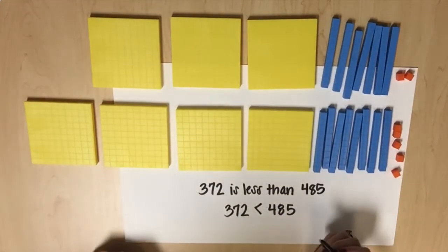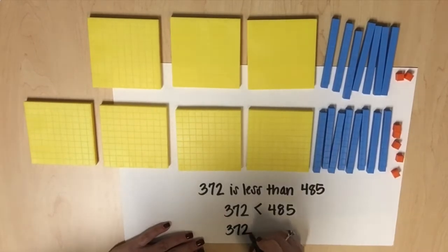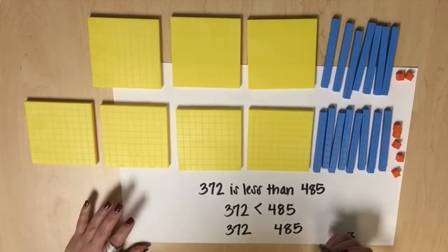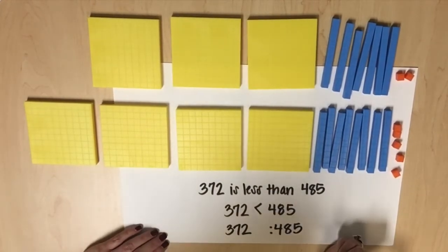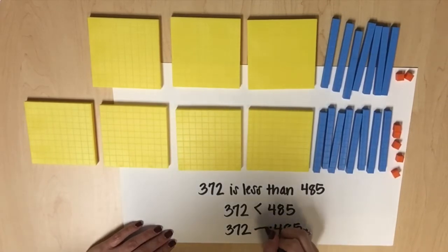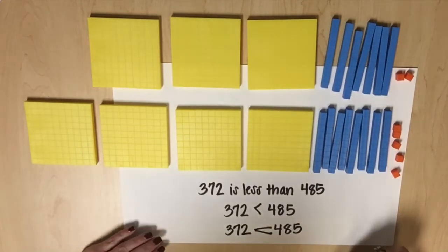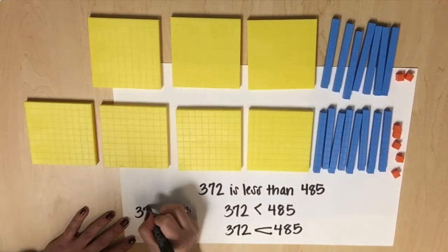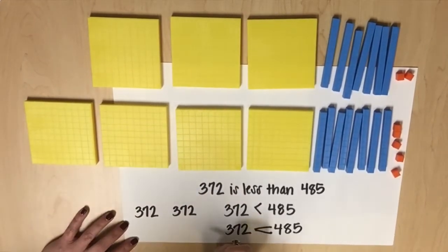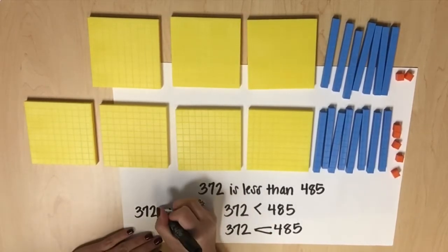Students can also use the dot method when comparing numbers. Starting with this comparison, put two dots next to the number of the greater value, then put one dot next to the lesser number, and connect. You can also do this if two numbers are equivalent — put dots by each one because they're both the same number, and connect.